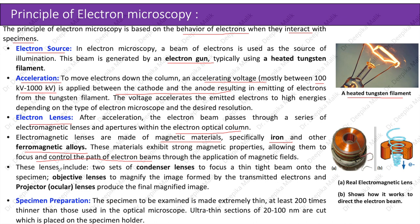These lenses include two sets of condenser lenses to focus a thin tight beam onto the specimen, objective lenses to magnify the image formed by the transmitted electrons, and projector or ocular lenses to produce the final magnified image. Here you can see the real electromagnetic lens; the second image shows how it works to direct the electron beam.